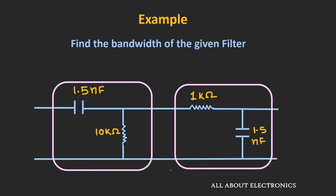Now that we have seen the phase and frequency response of this bandpass filter, let's take one example. In this example, we have been given a filter and asked to find the bandwidth of the given filter. The high pass filter and the low pass filter are cascaded, and using this cascade connection, the bandpass filter has been designed. To find the bandwidth, let's first find the cut-off frequency of each individual filter.